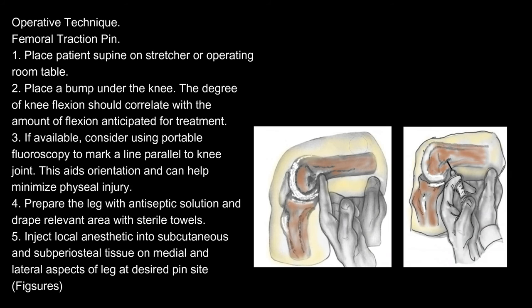Operative technique — Femoral traction pin: 1. Place patient supine on stretcher or operating room table. 2. Place a bump under the knee. The degree of knee flexion should correlate with the amount of flexion anticipated for treatment. 3. If available, consider using portable fluoroscopy to mark a line parallel to the knee joint. This aids orientation and can help minimize physeal injury. 4. Prepare the leg with antiseptic solution and drape the relevant area with sterile towels.